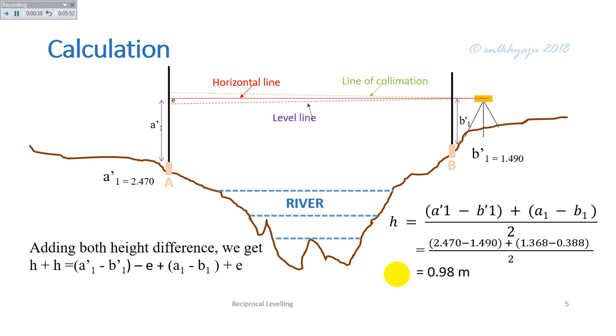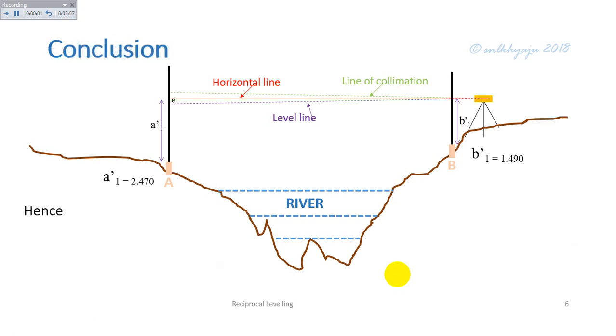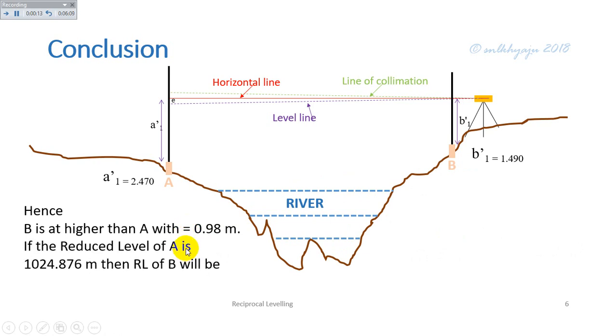Hence, point B is at higher than A with 0.98 meters. If the reduced level of point A is 1024.876 meters, then the RL of point B will be 1024.876 plus 0.98, calculated as 1025.856 meters.